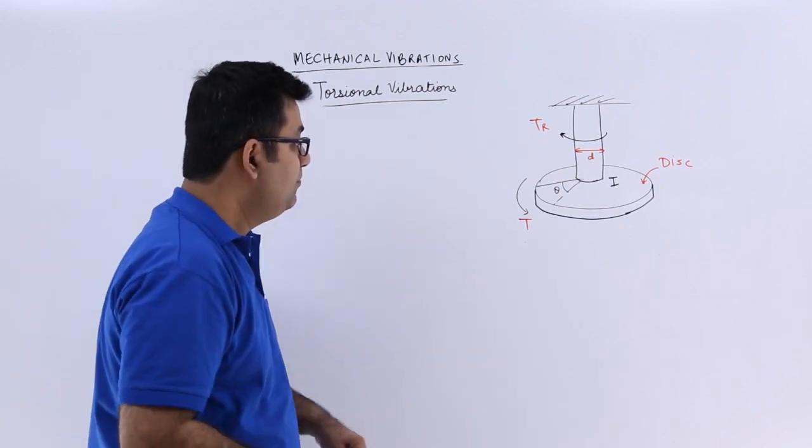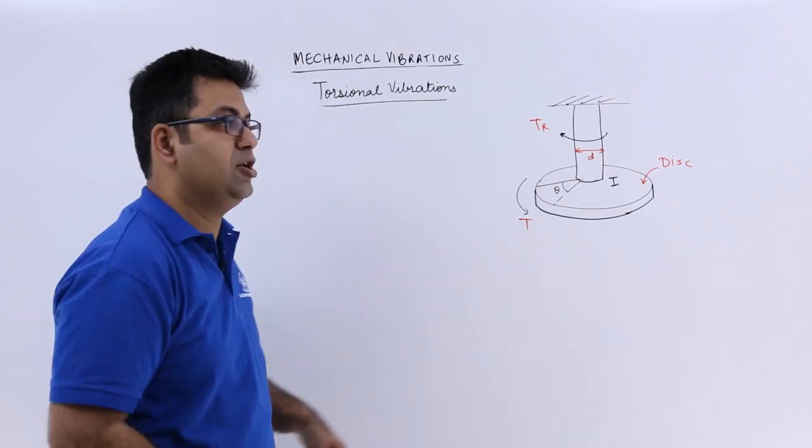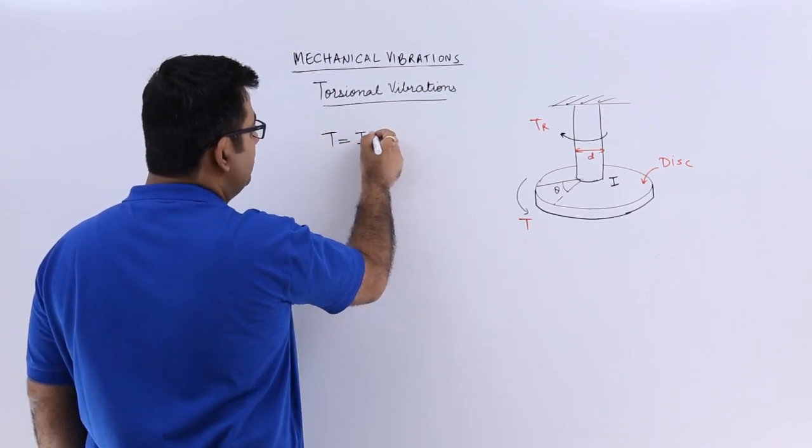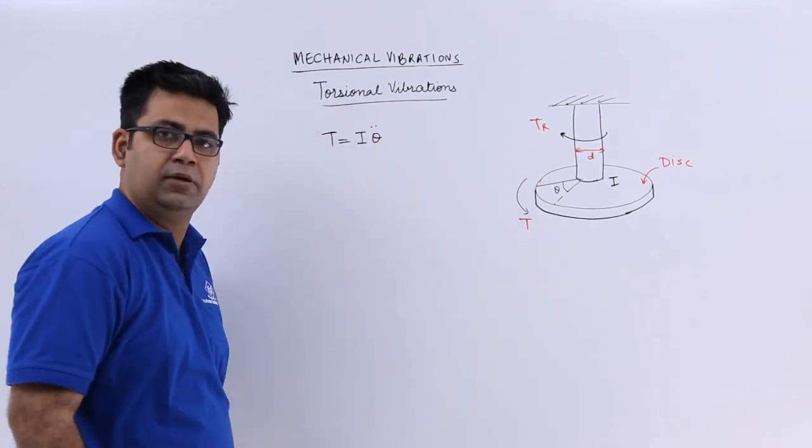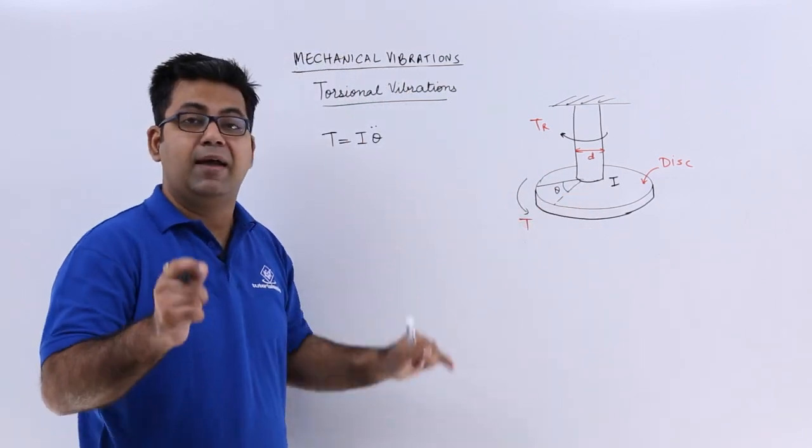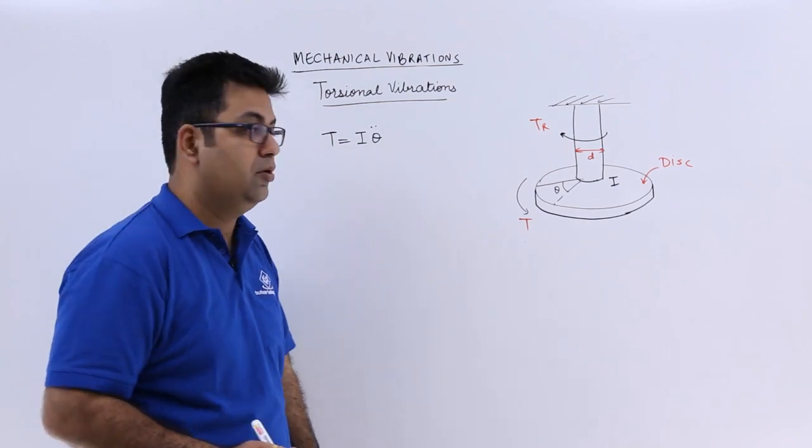So the mathematical value of this applied torque is how much? It is equal to I into theta double dot. I is the moment of inertia and theta double dot is the angular acceleration.